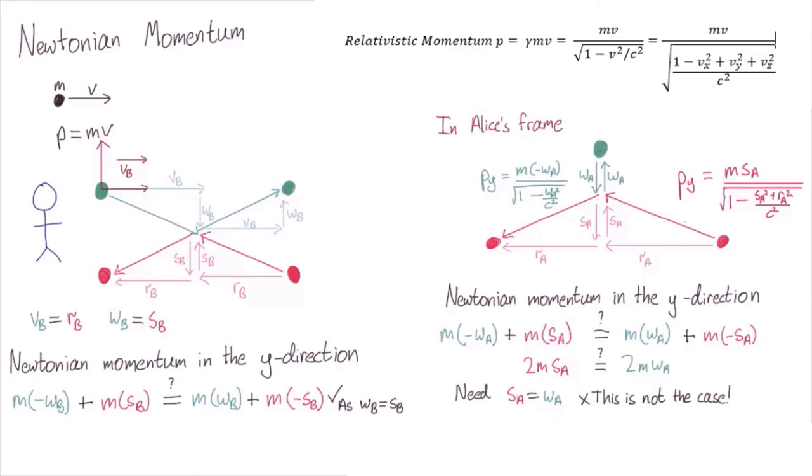in every experiment performed in a relativistic regime, p = γmv has been found to be a conserved quantity. Because of that, we call this relativistic momentum.